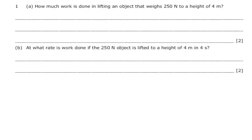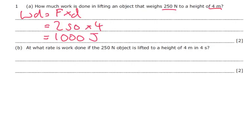Okay, how much work is done in lifting an object that weighs 250 Newtons a height of 4 meters? Well, work done is equal to force times by distance. Our force here is 250 Newtons and our distance is 4 meters. So 250 times 4 is 1000 joules.